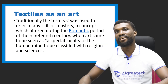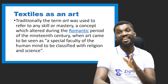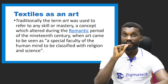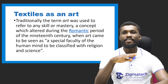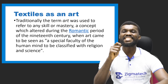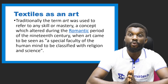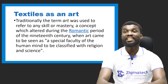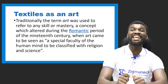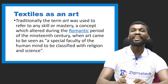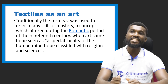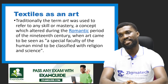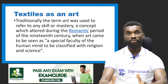Now let's look at textile as an art. Traditionally, the term 'art' was used to refer to any skill or mastery — a concept which altered during the Romantic period of the 19th century, when art came to be seen as a special faculty of the human mind, to be classified with religion and science. Art is something that is attached to humanity — there is no way you can take art away from humanity.